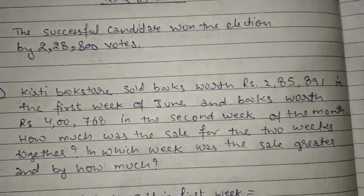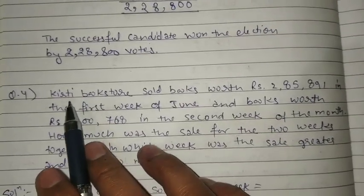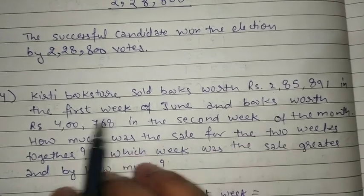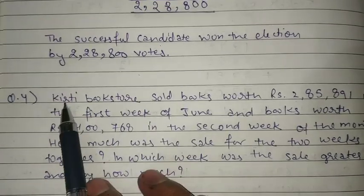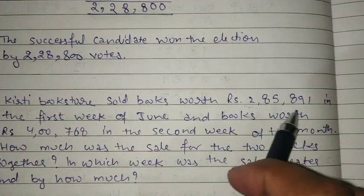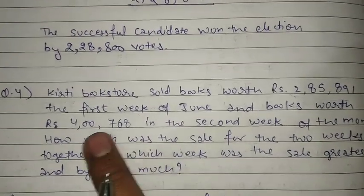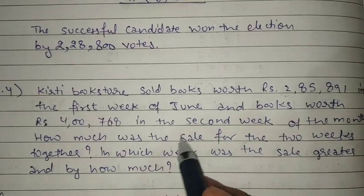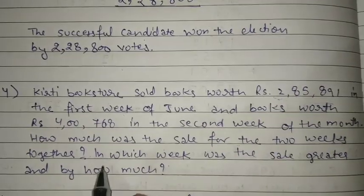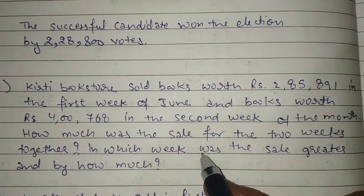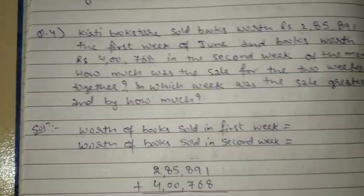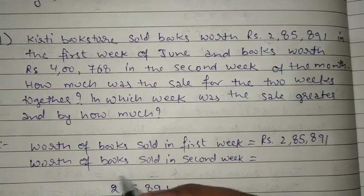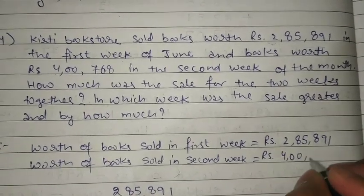Now let's do the last question, question 4. Kirti Bookstore sold books worth rupees 2,85,891 in the first week of June and books worth rupees 4,00,768 in the second week. The first part asks: how much was the sale for the two weeks together? The second part asks: in which week was the sale greater, and by how much?